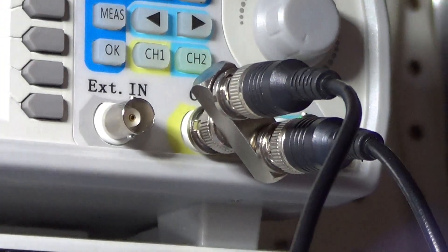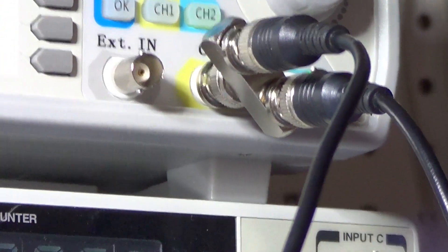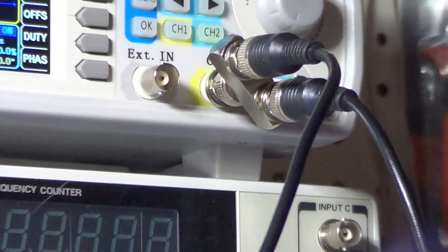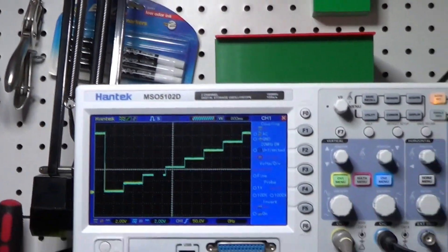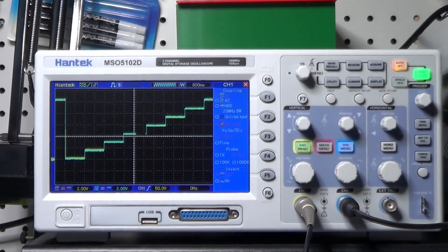The output signal also goes to the second channel of the oscilloscope through a separate cable, where we can see it as a blue trace, and this way we can compare the input and the output of the circuit.